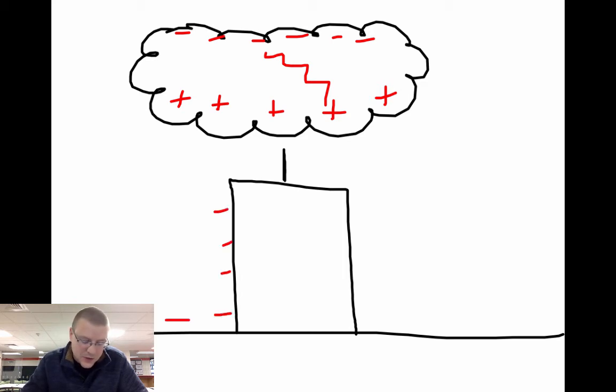And if the cloud-to-cloud lightning doesn't work, we can neutralize ourselves through ground-to-cloud or cloud-to-ground. So lightning can jump either way. It really doesn't care which way the electrons move.